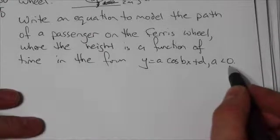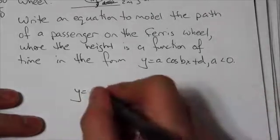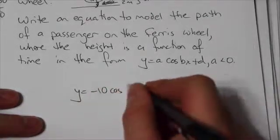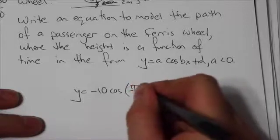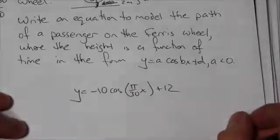So that's all we needed to do. The last little bit here tells us that the a value is negative. Well, I know that the a value is 10, so my equation is going to look like this. It'll be negative 10 cosine of π over 30x plus 12. Done.